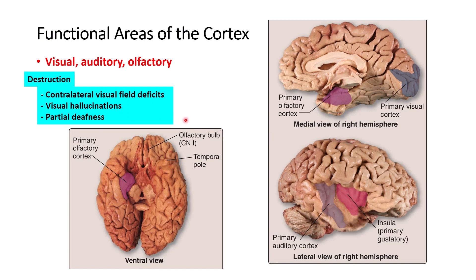Damage to these areas depends on what is involved. If the visual cortex is involved, you cannot see things properly — visual field defects and visual hallucinations can occur. If the auditory cortex is damaged, you get partial deafness rather than full deafness, because both cortices are processing sound. This is why unilateral damage does not cause complete hearing loss.